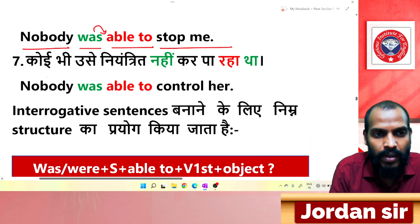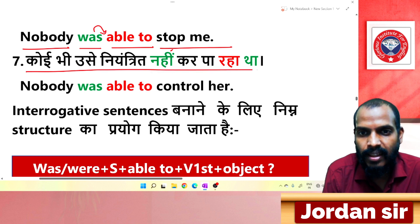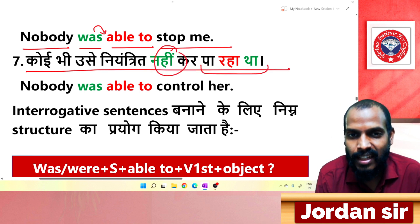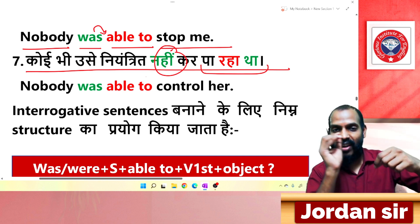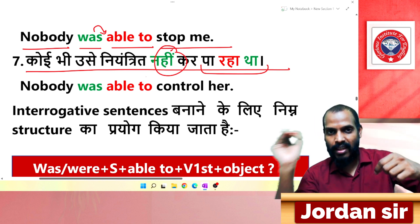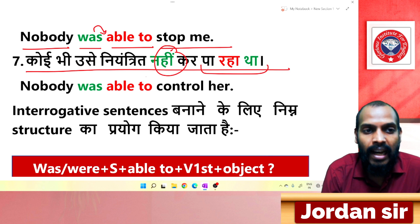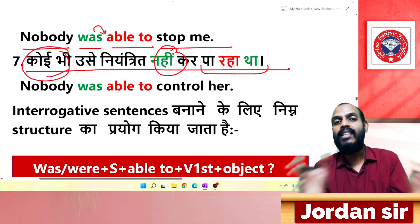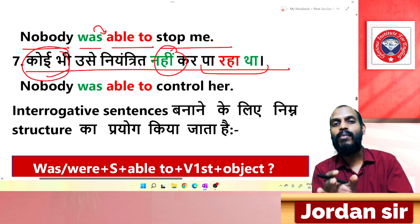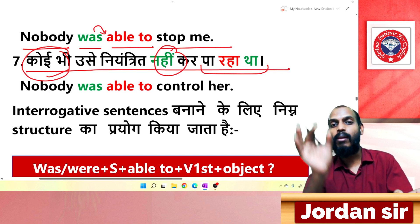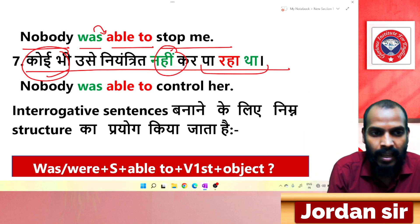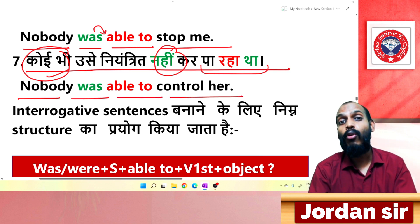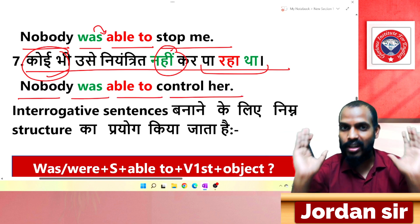Next: 'कोई भी उसे नियंत्रित नहीं कर पा रहा था.' This is also negative. When 'कोई भी' is the subject, use 'nobody' — and with 'nobody', do not add 'not' after 'was/were'. Translation: 'Nobody was able to control her.' Nobody was able to control her.